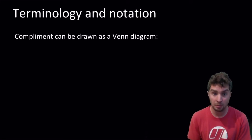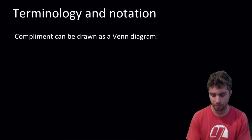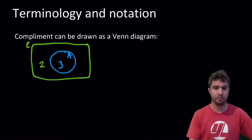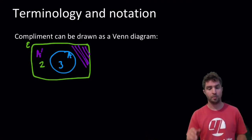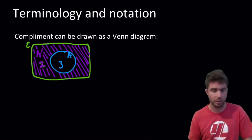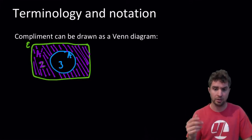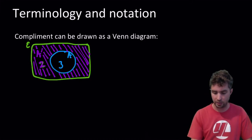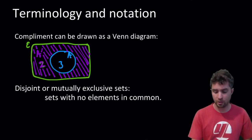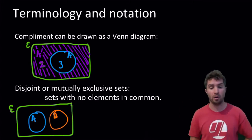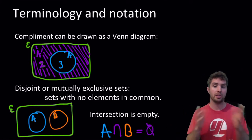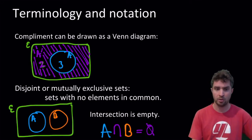Still more terminology: complements. The complement of A is anything that's not in A. We can represent that with a Venn diagram — the complement of A would be everything inside the sample space but not in event A. From our first example, the complement has 2 elements — everything outside the circle. Disjoint or mutually exclusive sets are sets with no elements in common. We draw this as two totally separate, non-overlapping circles. The intersection of such sets would be empty — there's nothing that's in both A and B.